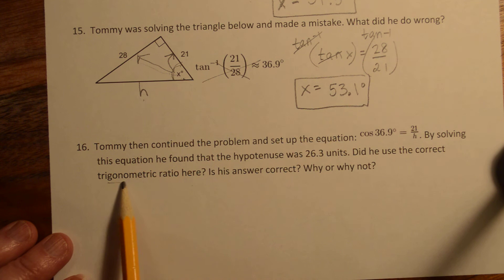All right, so did he use the correct trig ratio here? Yes. All right, adjacent over hypotenuse is cosine. Is his answer correct?